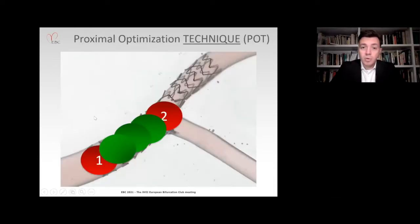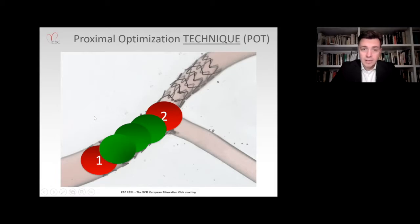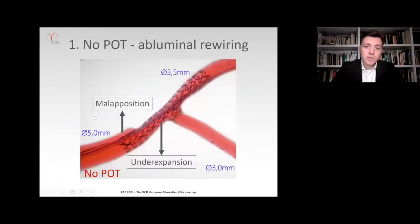When we talk about POT, it is not only the proximal optimization we talk about — it is a technique, and any technique needs to be learned and executed correctly. So the emphasis of this brief presentation will be on how to correctly execute proximal optimization, and I would like to focus on two important aspects: not to overlook the proximal edge of the stent, and secondly, how to be precise at the point of the confluence at the bifurcation core. Let us first start with the more proximal segment.